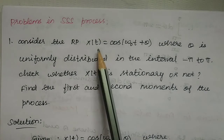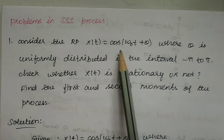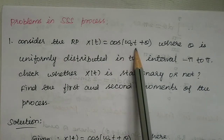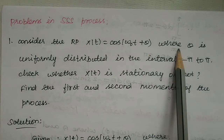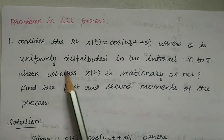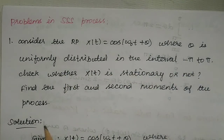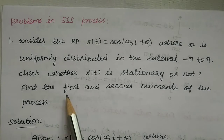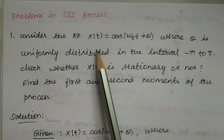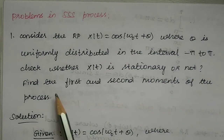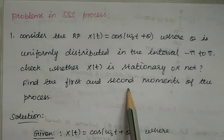Consider the random process x of t equal to cos(ω₀t + θ), where θ is uniformly distributed in the interval −π to +π. Check whether x of t is stationary or not. Find the first and second moments of the process.